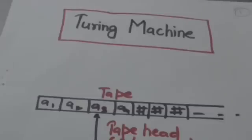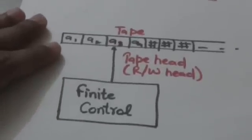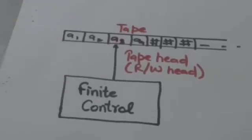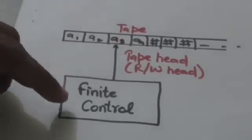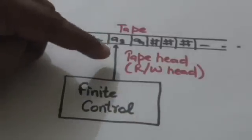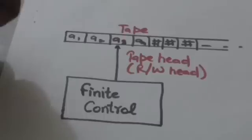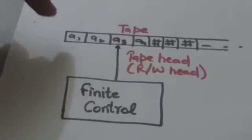Hello friends, welcome back. In this tutorial we will study about Turing machines. A Turing machine consists of a finite control, a tape head which is also called read-write head, and a linear tape.